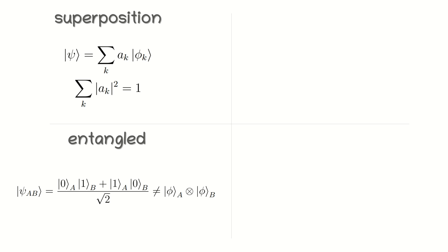Entanglement is a phenomenon where the quantum states of two or more particles become correlated and interdependent. This feature of quantum systems involves multiple particles. By definition, a pure state psi is an entangled state if it cannot be written as a product of the states of individual subsystems. The non-entangled states are called separable states.